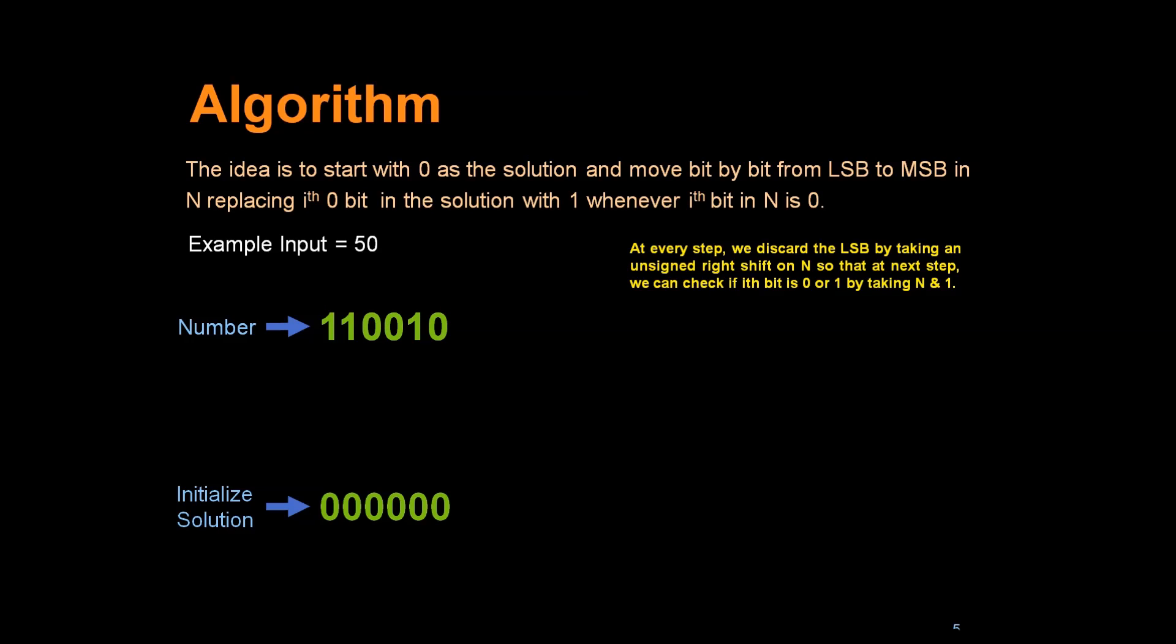The way to get each bit one by one is by doing right shift and doing N and 1, which will give us the value of LSB. I hope we all understand the output of operation N and 1, which always gives the LSB or least significant bit of N.